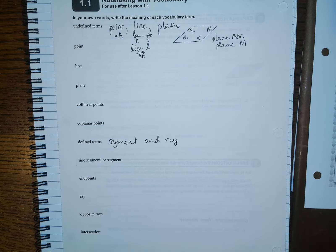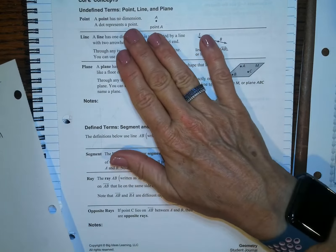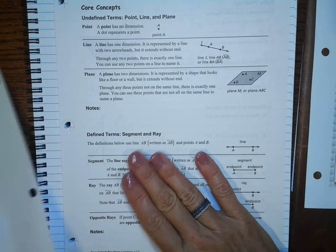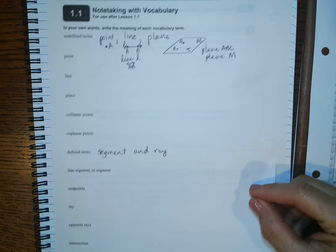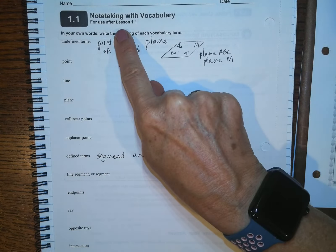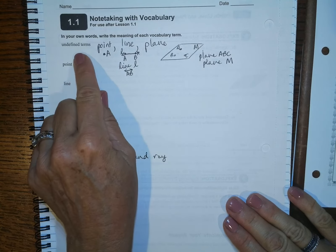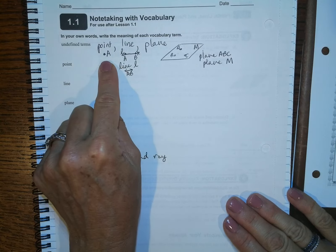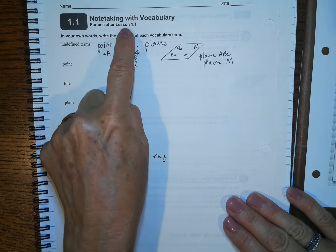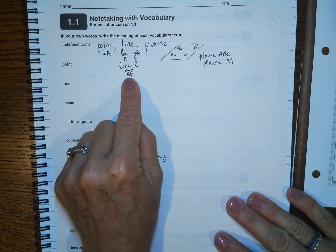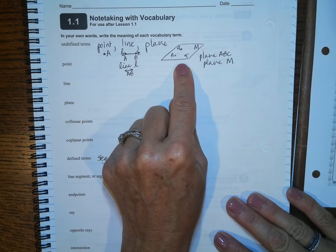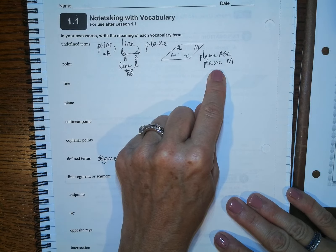All right, geometry scholars, what we're going to do is go through your journal, 1.1. And as we go through the core concepts, you're going to be taking notes on the previous sheet, which says note-taking with vocabulary. So I've already started with the undefined terms of point A, line L. There's two different ways to represent that. Plane ABC or plane M, those two representations.